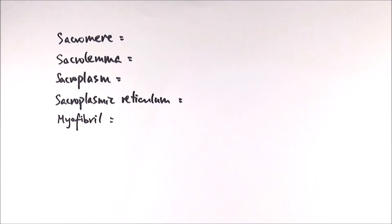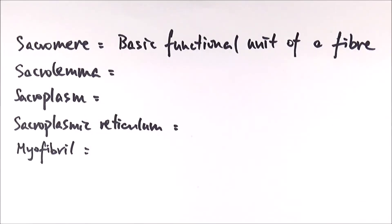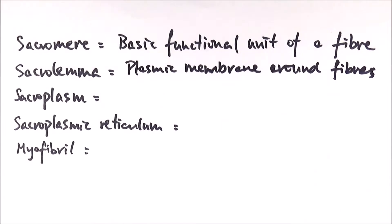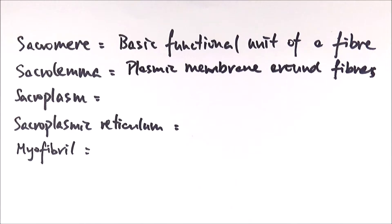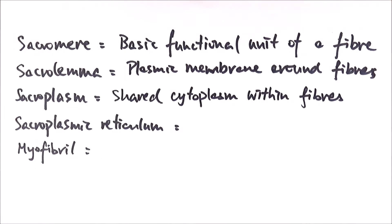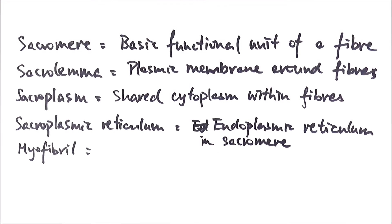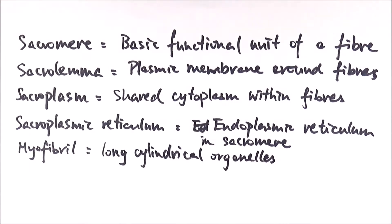The first keyword is the sarcomere — the basic functional unit of a fiber. The sarcolemma refers to the plasma membrane wrapped around the fibers, almost like a plastic wrap around a bundle of sticks. Sarcoplasm is the cytoplasm shared within the fibers, made up of fluid to allow different ions to move across, which is very important for muscle contraction. Then we have the sarcoplasmic reticulum, which is essentially endoplasmic reticulum within the sarcomere.